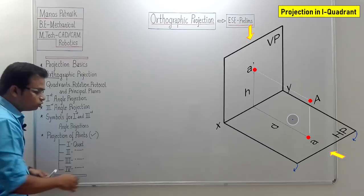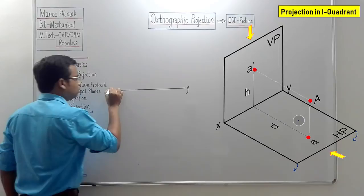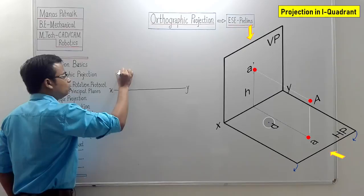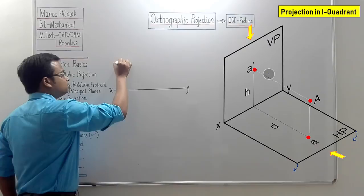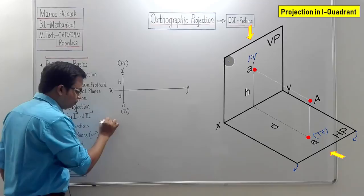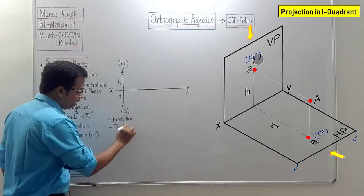There will be different arrangements for all four quadrants. Let me draw an XY line to explain all four cases. For first quadrant: h falls above the XY line and d falls below. Always remember — with h, you put a dash, making it a'; with d, you don't put a dash, just a. A dash (a') always refers to the front view; no dash (a) refers to the top view.